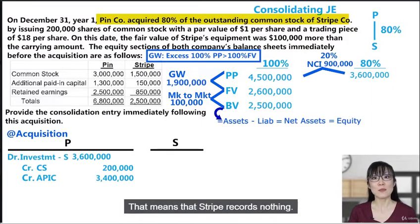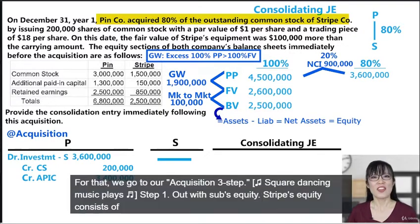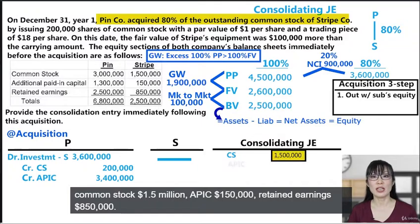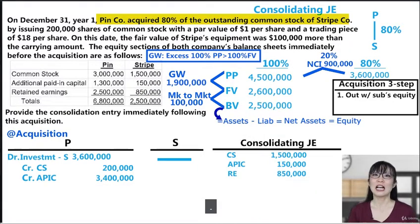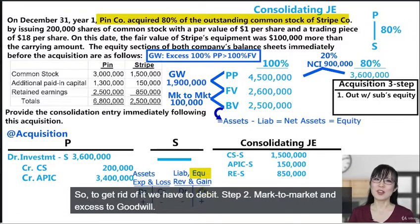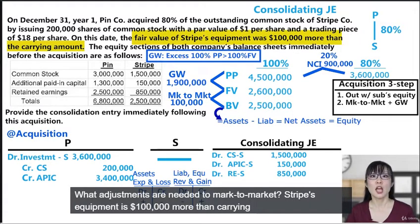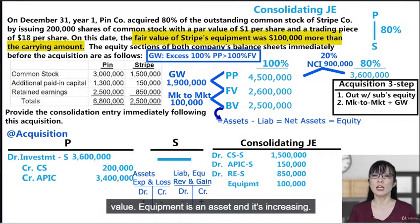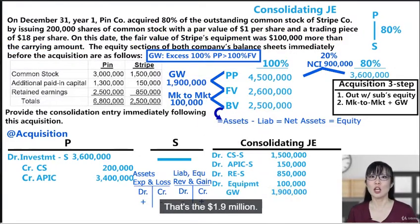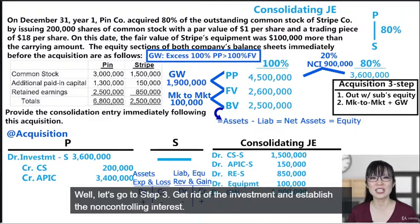Now for the consolidating journal entry right after acquisition, using our acquisition three-step. Step 1 — out with the sub's equity: Stripe's equity consists of common stock $1.5 million, APIC $150,000, and retained earnings $850,000. We put an S after each account to clarify these are Stripe's equity. Their normal balance is credit, so to get rid of them we debit. Step 2 — mark to market and excess to goodwill: Stripe's equipment is $100,000 more than carrying value, so equipment is an asset increasing — that's a debit of $100,000. Then goodwill of $1.9 million — an asset increasing — is also a debit.